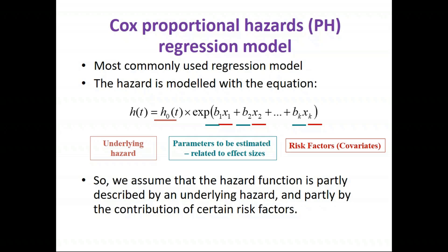For example, if an individual on the treatment group has a risk of death at some initial time that's twice as high as an individual on control, then at all later times the risk of death remains twice as high — we're assuming this constant proportional hazards relationship.